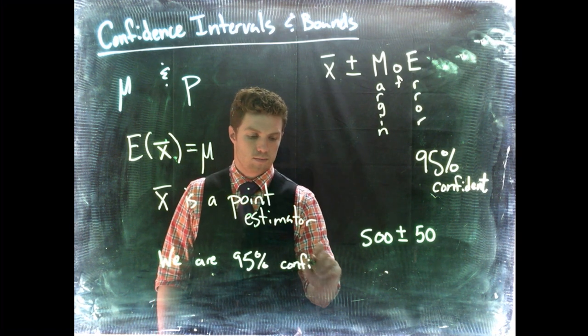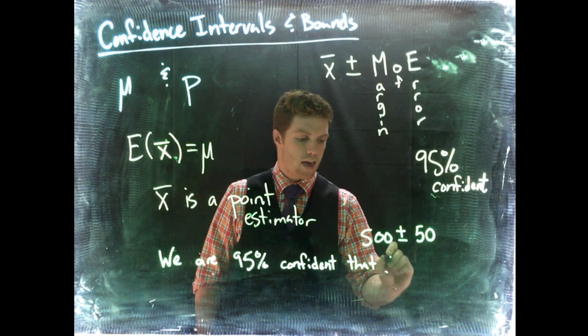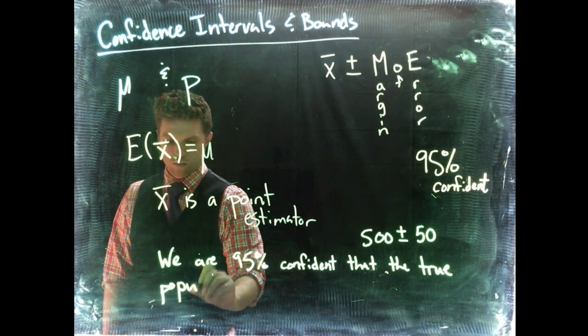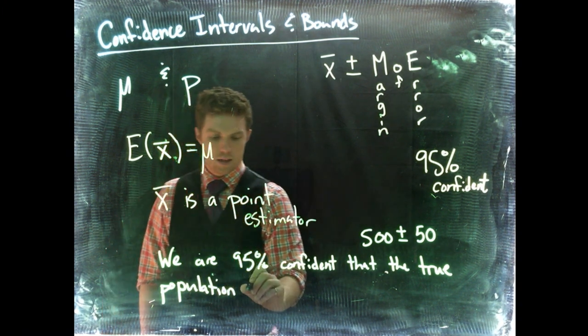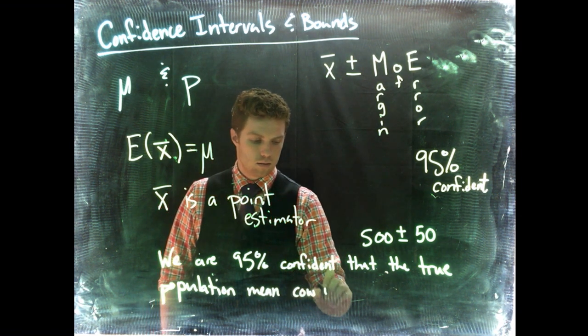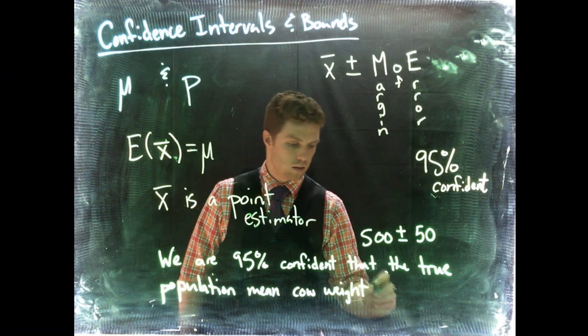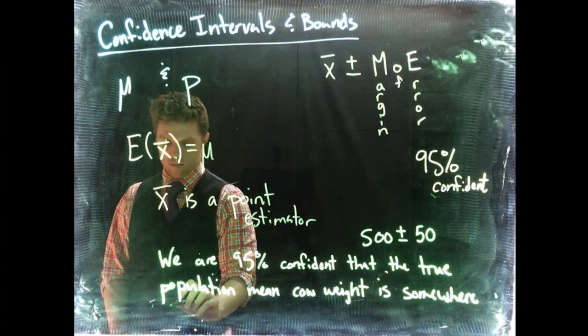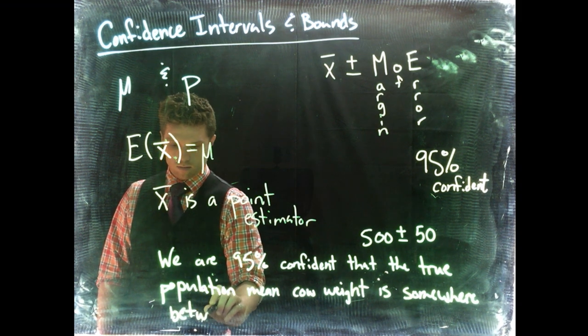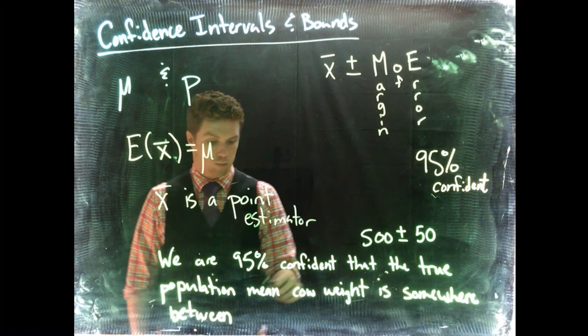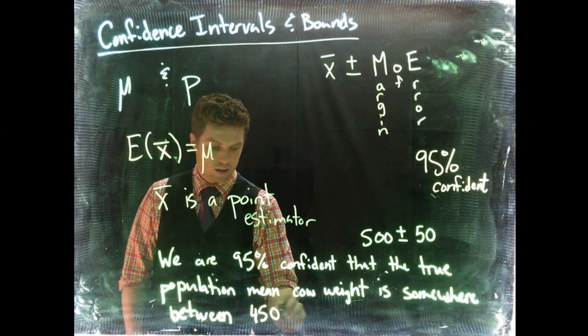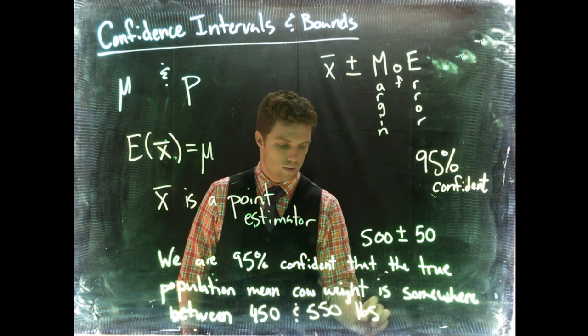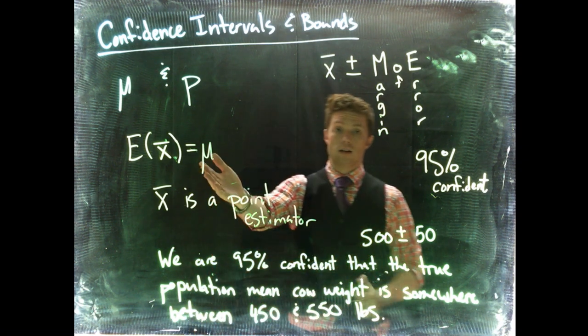So we are 95 percent confident that the true population mean cow weight is somewhere between, and we go plus or minus 500 pounds, so 450 and 550 pounds.